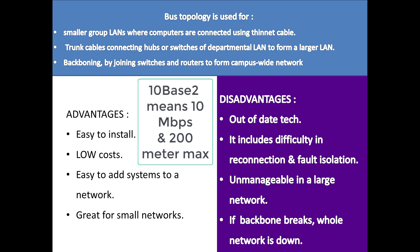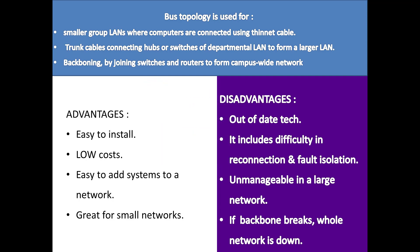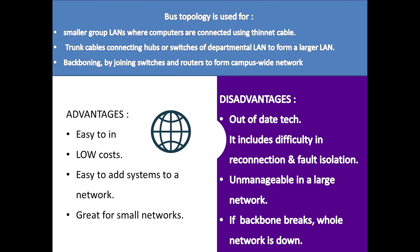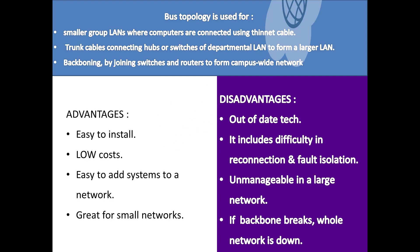Thinnet is 10Base 2 and Thicknet is 10Base 5. Here, 10 means 10 Mbps and 2 means 200 meter max. Bus Topology is also used to trunk cables connecting hubs or switches of departmental LANs to form a larger LAN, meaning expanding your network.